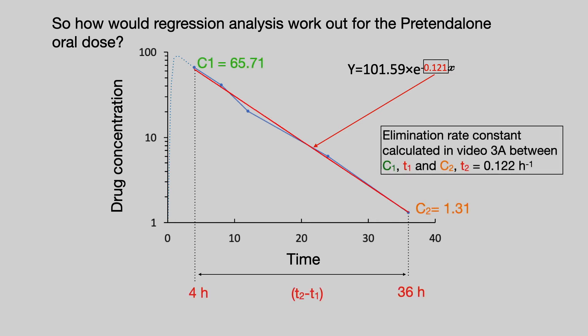And you will remember from the previous video we calculated the elimination rate constant as 0.122 using the two data points c1, t1, c2, t2. So, we end up with virtually the same result which isn't surprising since pretend-alone gives you a nice ideal straight line down the elimination phase.